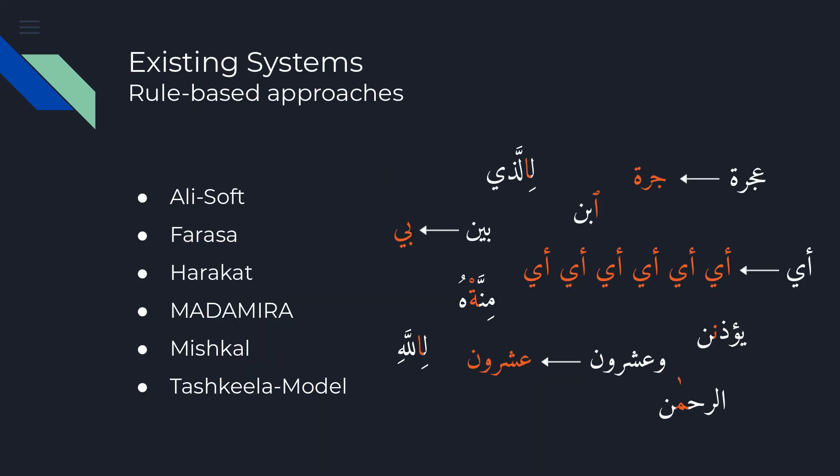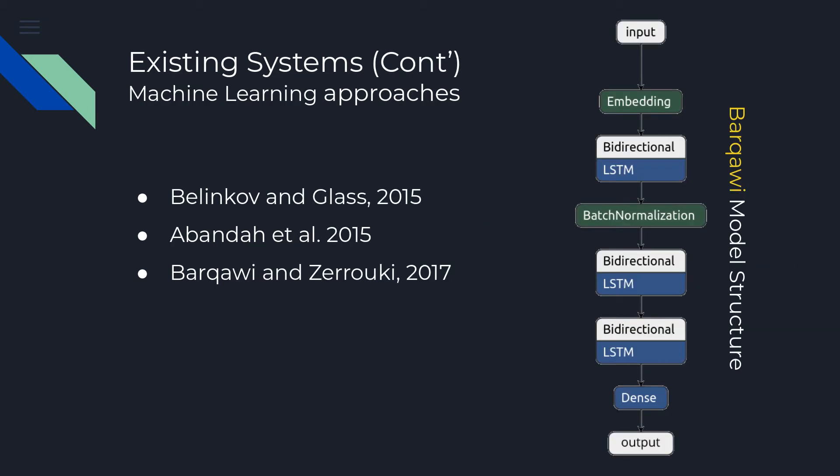Multiple rule-based existing systems were reviewed in Fadel 2019, where they all had issues and reported poor results. Very few worked on diacritization using machine learning approaches, where instead of relying on linguistic rules, the system learns by example given a correctly labeled and big enough dataset.